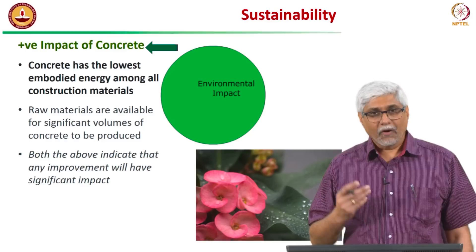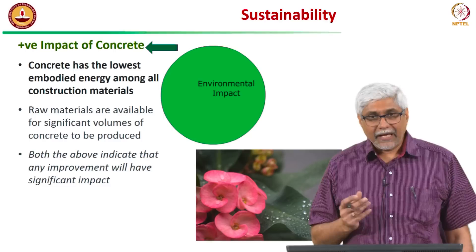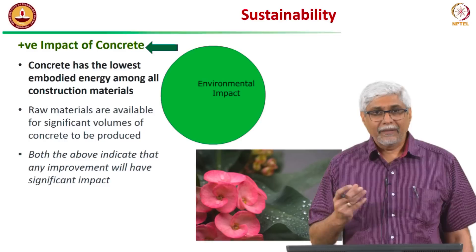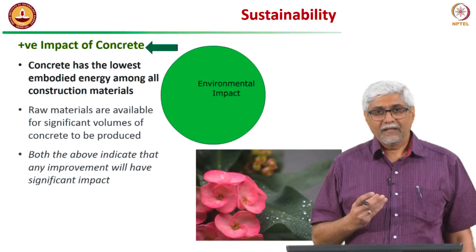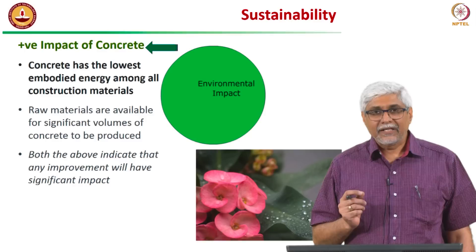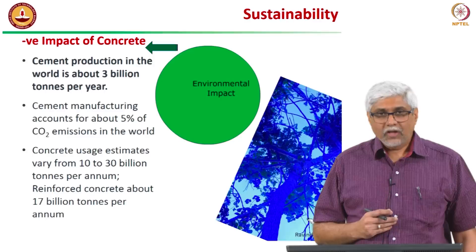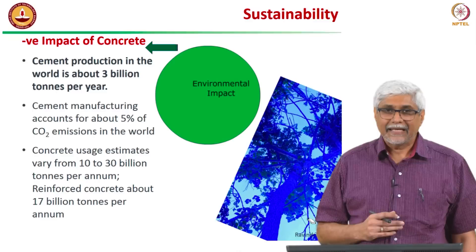For making concrete we need raw materials — cement and aggregates — which are generally available and we are not going to run out of them. This means that for a long time to come, concrete will continue to be the material with the lowest impact on the environment per unit volume or mass. So we cannot forget about sustainability aspects of concrete; any improvement is not too small, and we have to continuously look at how to decrease the impact.